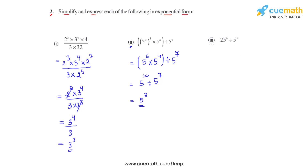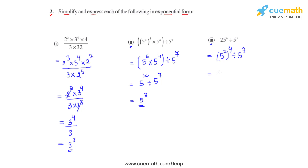In the third bit, the bases are not the same, so we first make them the same. We know 25 is a square of 5, so it can be written as 5 raised to 2, whole raised to 4, divided by 5 raised to 3. Using the power law, the powers get multiplied: 5 raised to 2 whole raised to 4 gives 5 raised to 8.